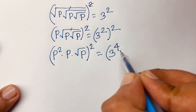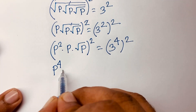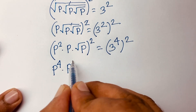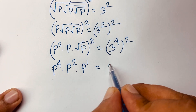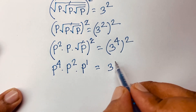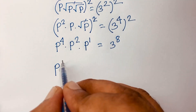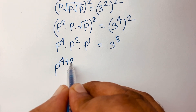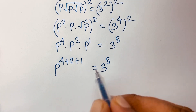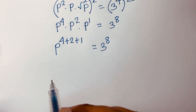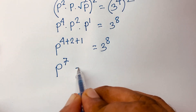Again, I square both sides. We get p squared times p squared, and the square root cancels, giving p to the power 1. The right side is 3 to the power of 4 times 2, which is 8. So the equation becomes p to the power of 4 plus 2 plus 1, according to exponential rules, equal to 3 to the power of 8.